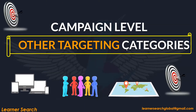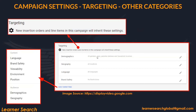Now let's look at the other targeting categories available at campaign level. These include demographics, geo, language, and brand safety. Demographics and geo fall under audience targeting, whereas language and brand safety fall under content targeting. Technology targeting is not available at campaign level, and other sub-options such as ad position, apps and URLs, and audience lists are also not available.